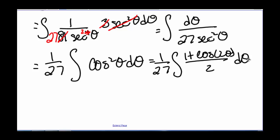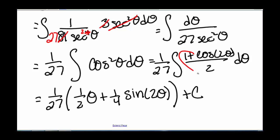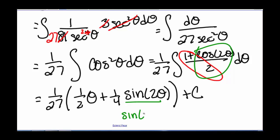Integrating this we get 1/27 times (1/2 θ plus 1/4 sine of 2θ) plus our constant C. You can see this by separating the integral into 1/2 and cosine of 2θ divided by 2. Now we need to get this back in terms of x. For sine of 2θ, we use the identity that sine of 2θ equals 2 times sine of theta times cosine of theta.